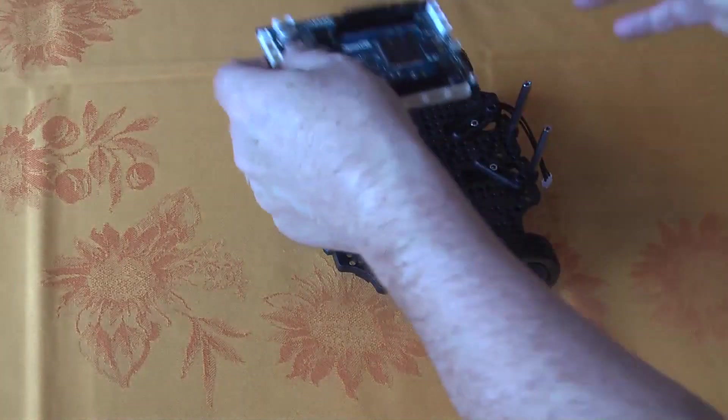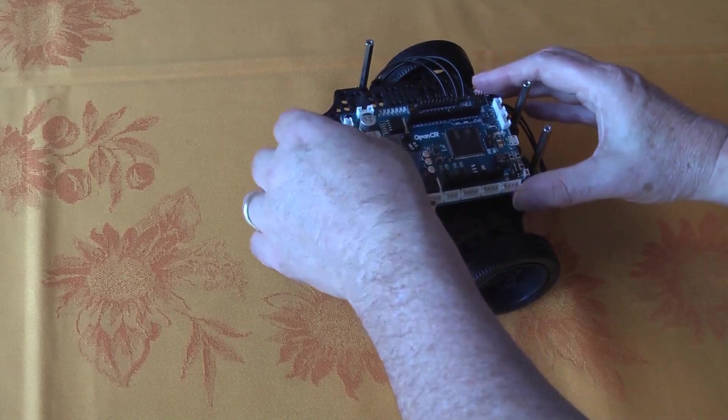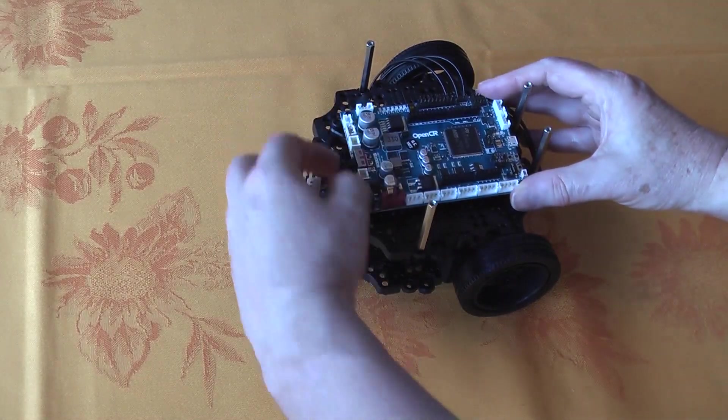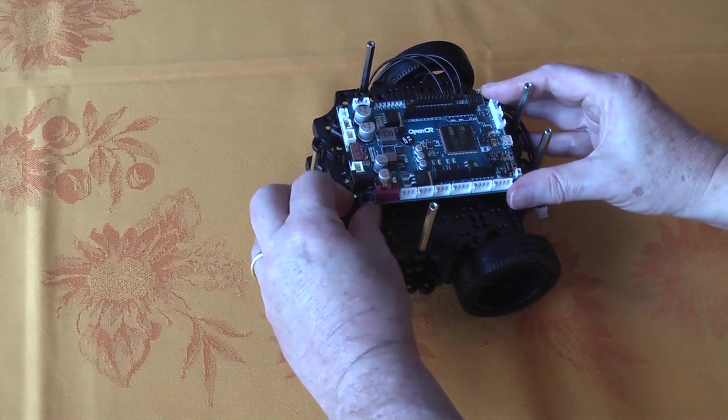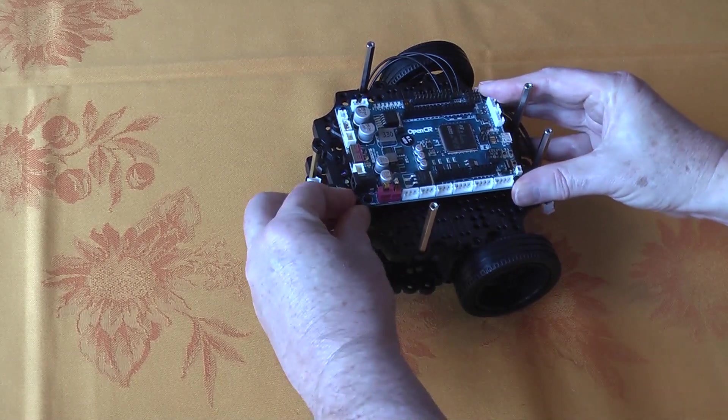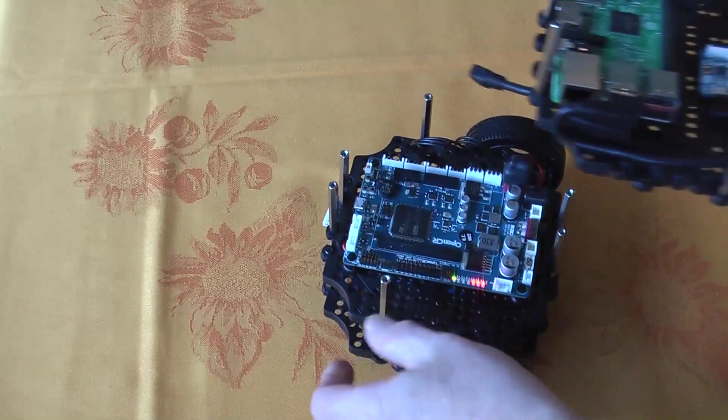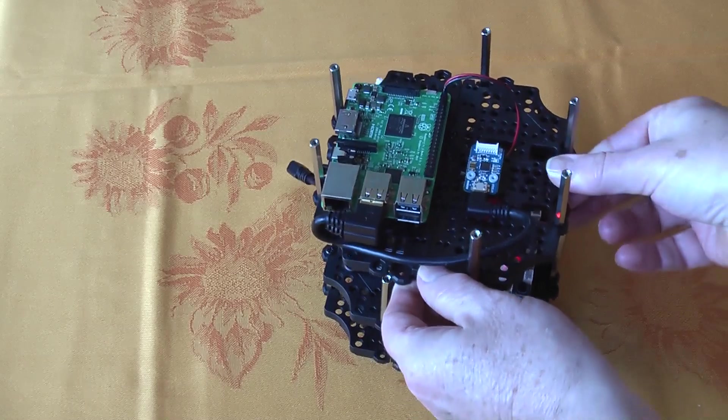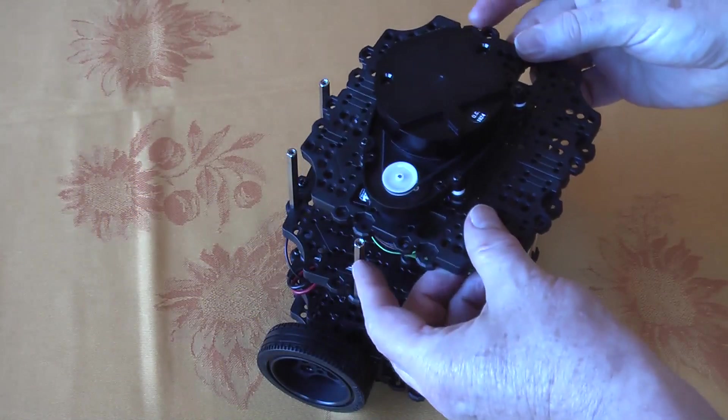The second layer includes the OpenCR controller that drives the wheels, and has a variety of digital and analog input-output pins, with lots of possibilities for expanding the platform. The third layer holds the Raspberry Pi, and the top layer secures the LiDAR.